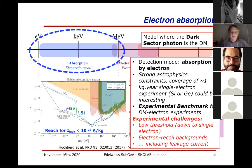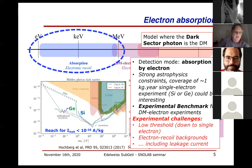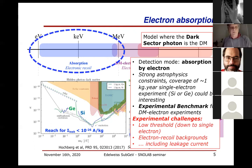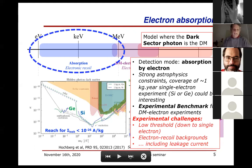For germanium experiments, the threshold for the reach is lower in mass because of a lower band gap and lower excitation energy needed to create an electron-hole pair. However, to do that you need a massive detector where the typical leakage currents you want in order to have a nearly background-free experiment are of the order of 10^-26 amperes per kilogram, which is quite low. This looks feasible in silicon devices, but the question is whether you can do that in germanium.